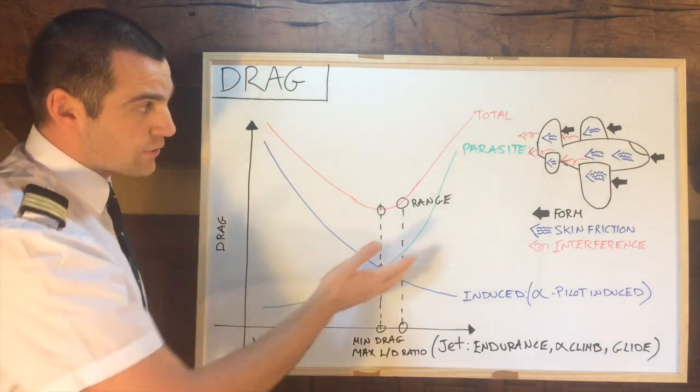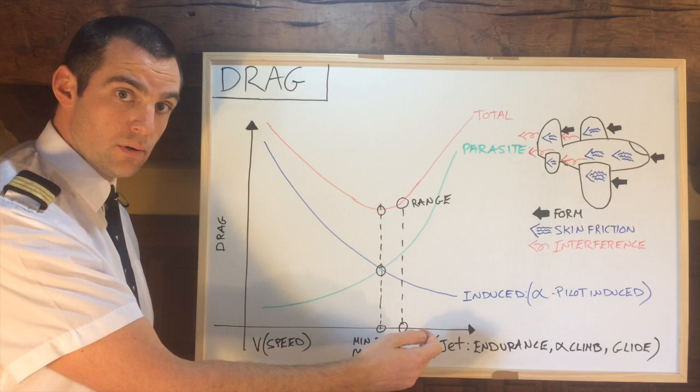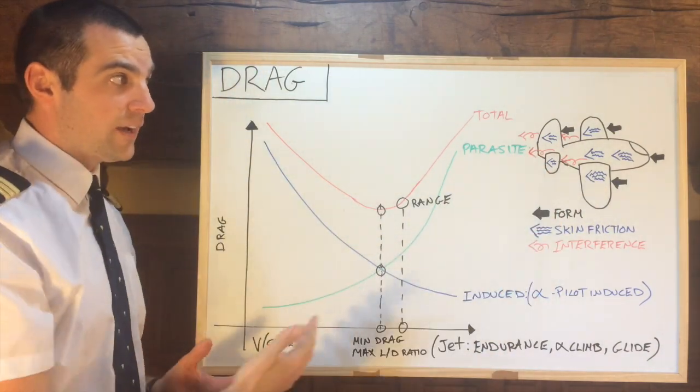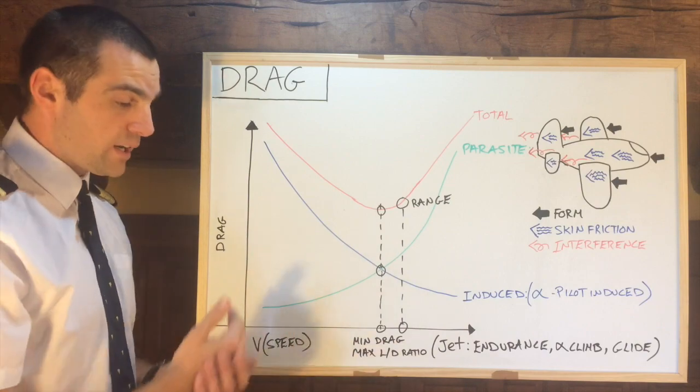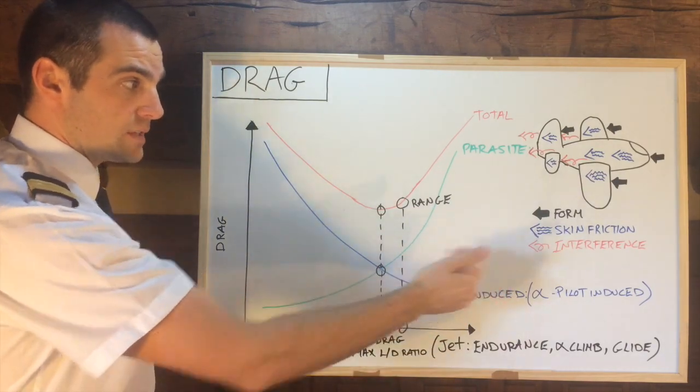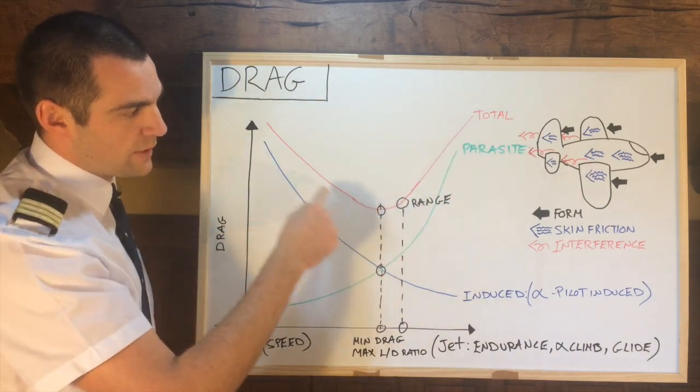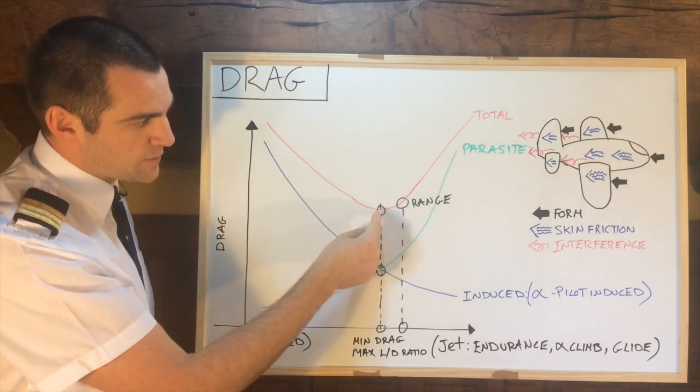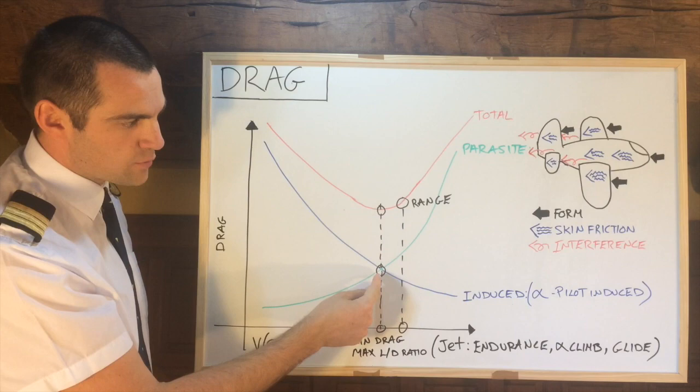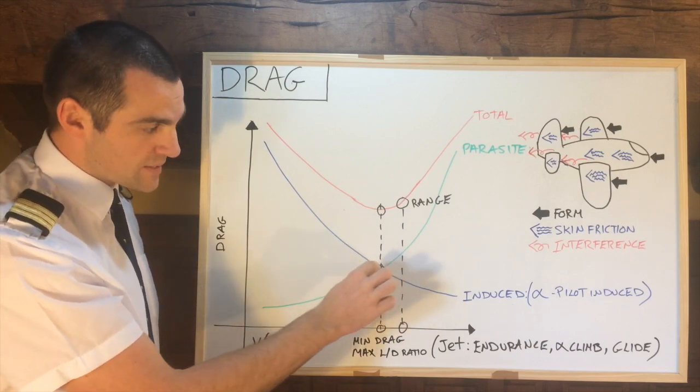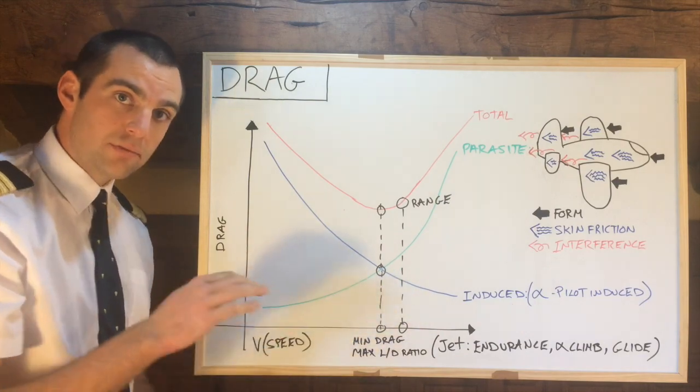So interference drag increases because, of course, the faster we go the more of all these types of drag will affect the aircraft. If we are standing still there will be none of these. Now as you can see, I've drawn a total drag curve here in red and you'll see there's the lowest point, which of course coincides with where the parasite and induced drag curves meet, because that point right there is the point of lowest drag.